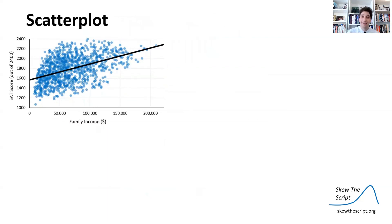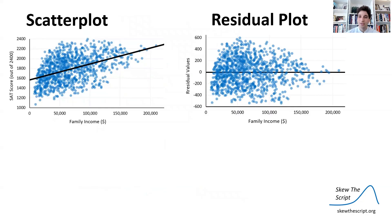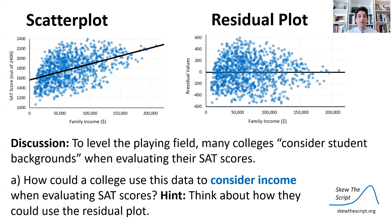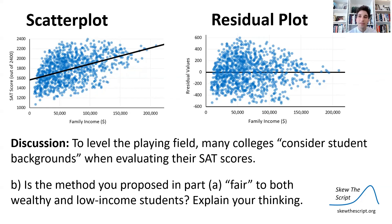Here's the scatter plot for that data along with the residual plot, which might provide some useful information. The discussion prompt for today: to level the playing field, many colleges try to consider student backgrounds when evaluating SAT scores. How could a college use this data to consider income when evaluating SAT scores — to level things out by income? Think about how they could use that residual plot. And part B: is the method you propose fair to both wealthy and low-income students? Explain your thinking.